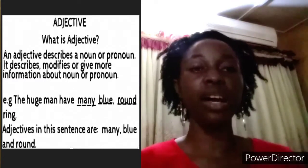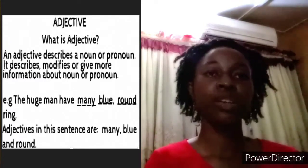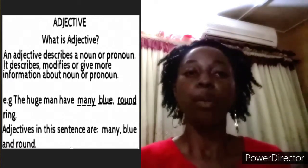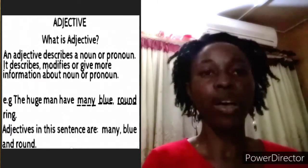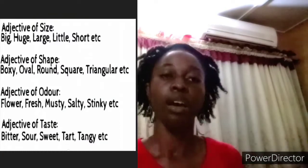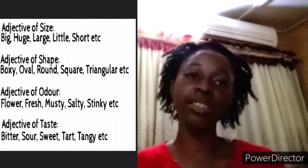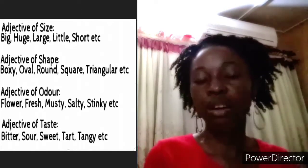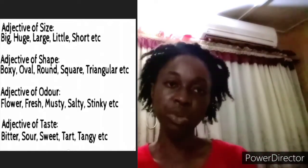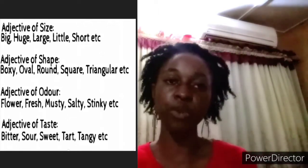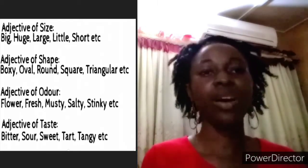Now we are moving on to adjective. An adjective describes a noun or a pronoun — you can say an adjective describes, modifies, or qualifies a noun or a pronoun, and gives more information about it. Examples: we have adjectives of shape like round, rectangular, oval, square. We have adjectives of size like big, small, huge, large, thin, fat, little, and so on.